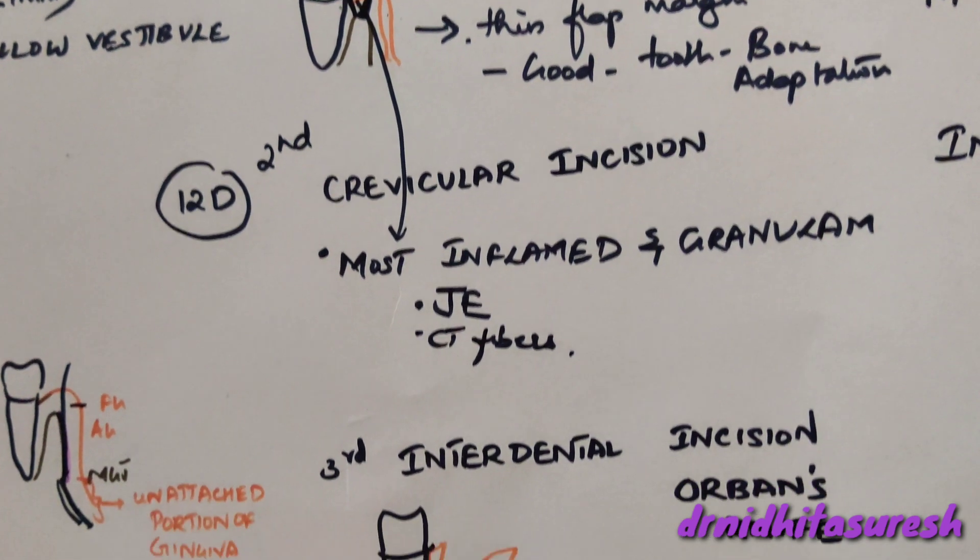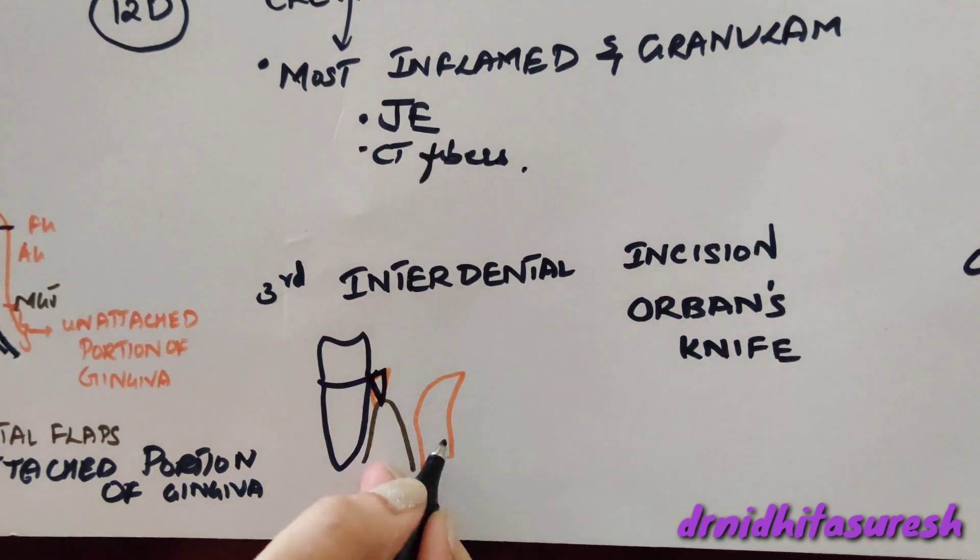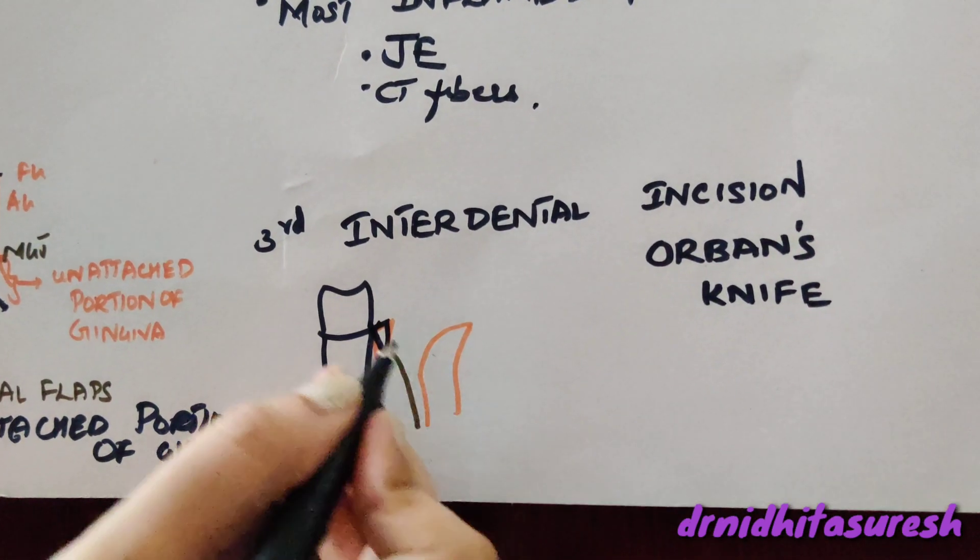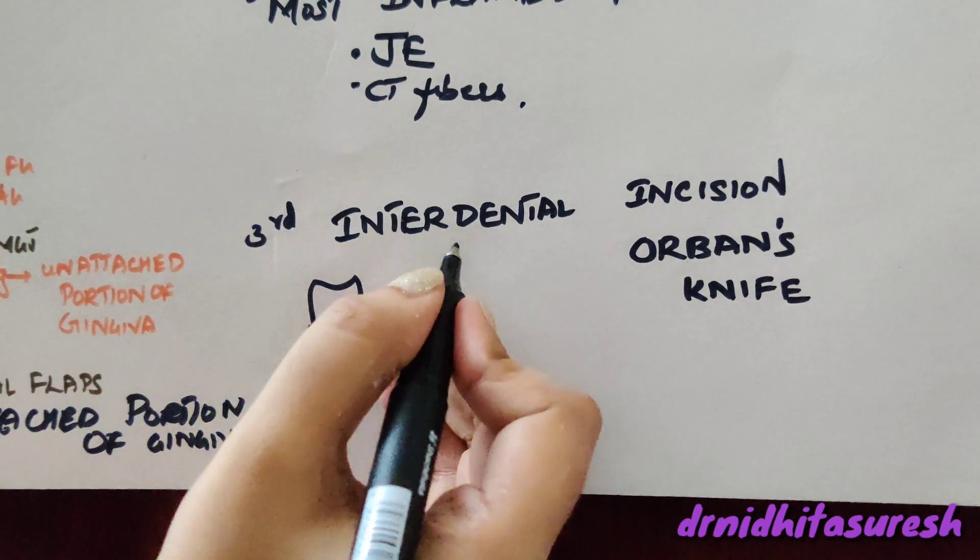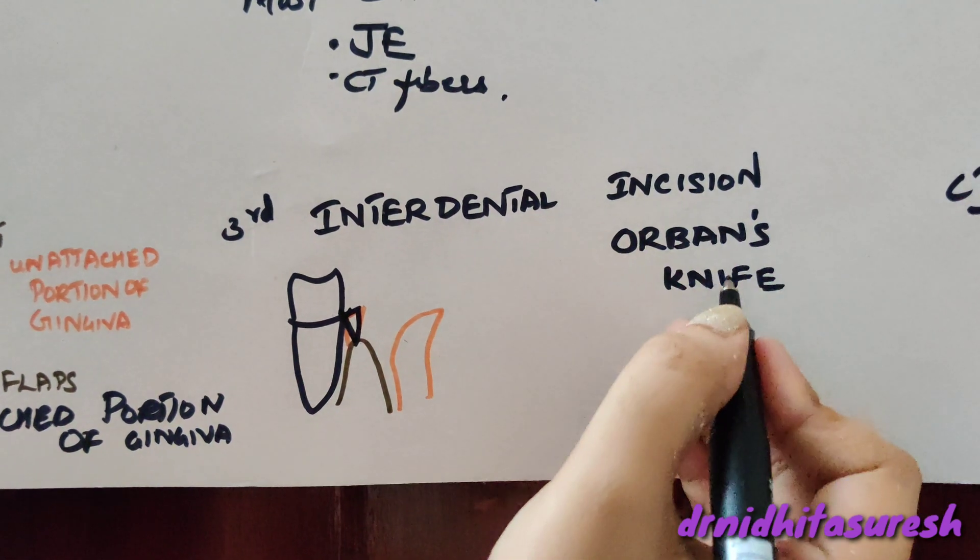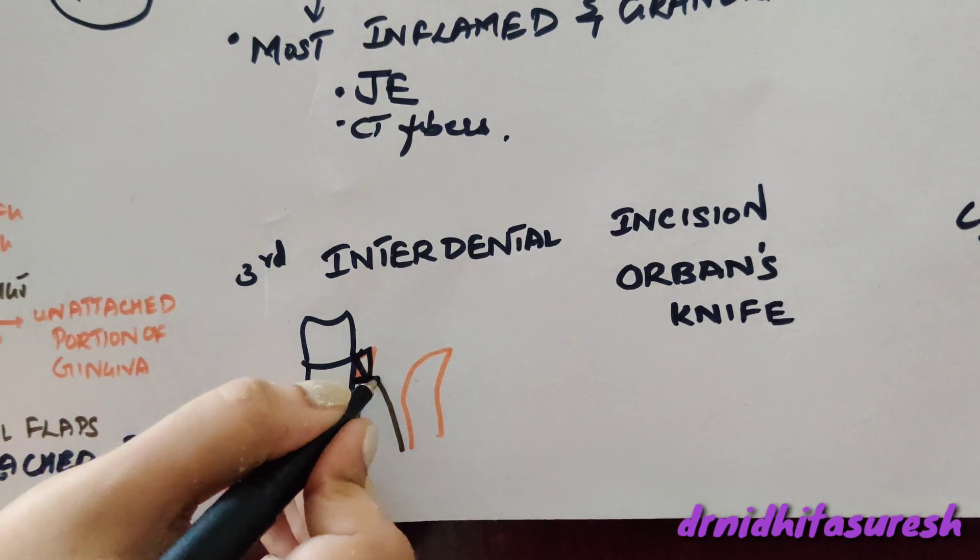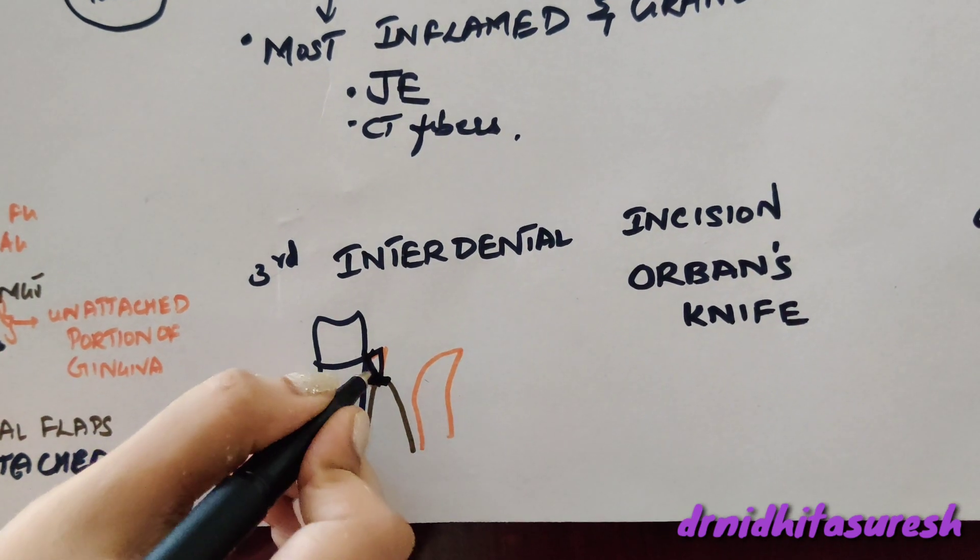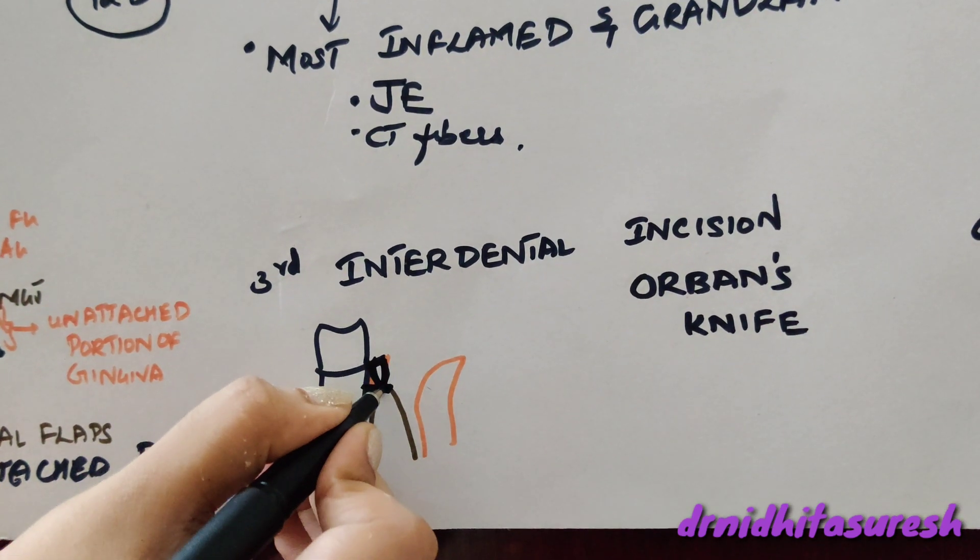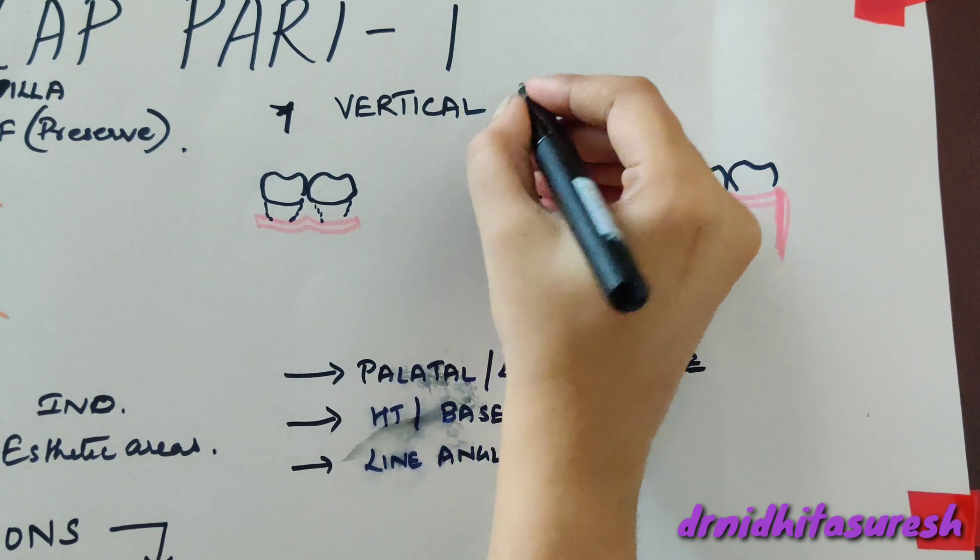Once this crevicular incision is given, you elevate the flap. You reflect the flap and then the third incision comes, which is the interdental incision. This is also a horizontal incision given by an Orban's knife. The interdental incision is given to remove the collar-like tissue around the tooth.